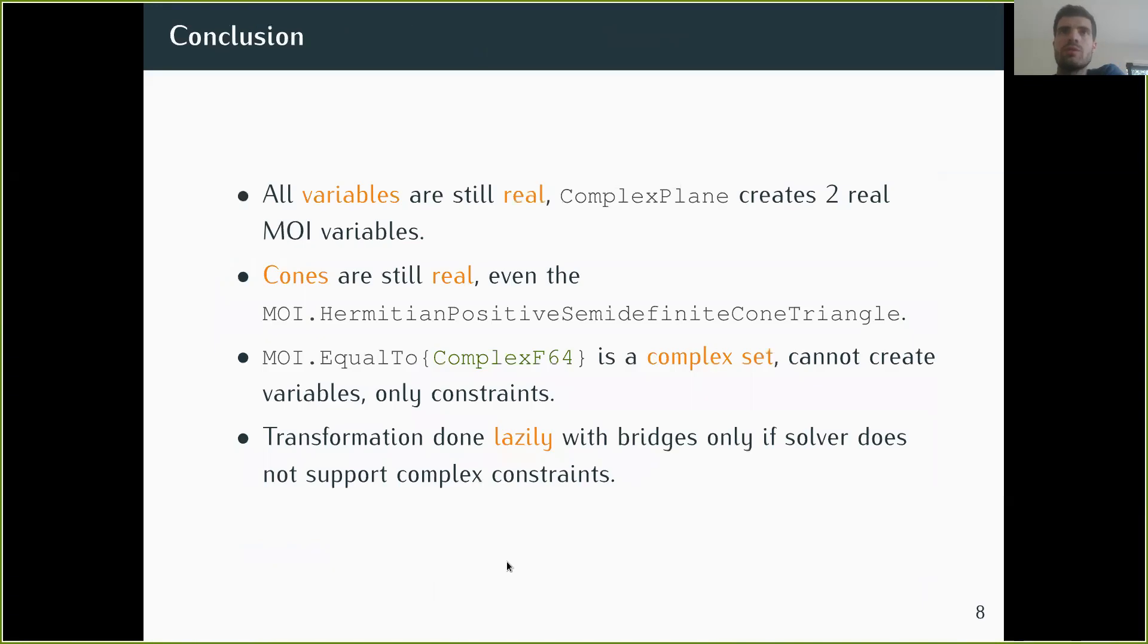In conclusion, all variables are still real. When the user wants to create a complex variable, you simply create two real variables that we combine. The cones are still real, so the Hermitian PSD cone is a cone in R^4. The only set that is now complex is the EqualTo of Complex64, used when you have an equality between two complex expressions. You cannot create one variable in this set because that would be creating a complex variable, but you can add a constraint in this set. The transformation is done lazily by adding new sets and new bridges, so solvers that support complex constraints will exploit it and be faster. This also gives an incentive to support complex numbers in solvers. Thanks for your attention, and let me know if you have any questions.